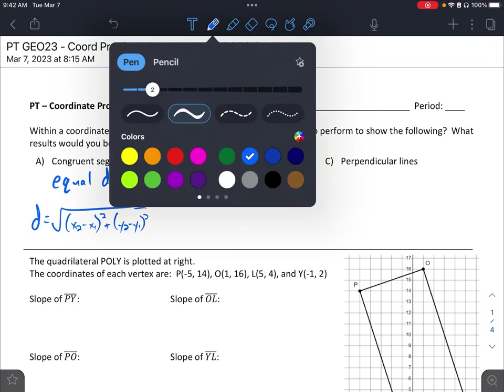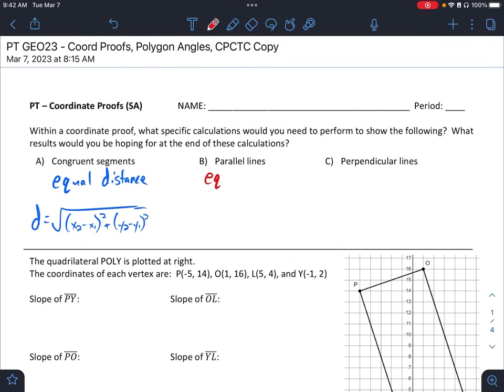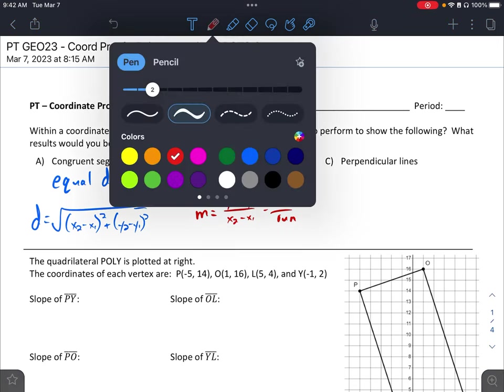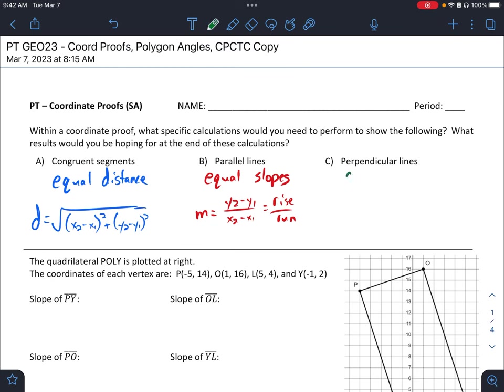If we have parallel lines, we have equal or congruent slopes. And using our slope formula, we have m is y2 minus y1 over x2 minus x1, or sometimes you can do rise over run, but be careful. I see a lot of mistakes with positive or negatives with rise over run. And the last one, perpendicular lines, here we want opposite reciprocal slopes.